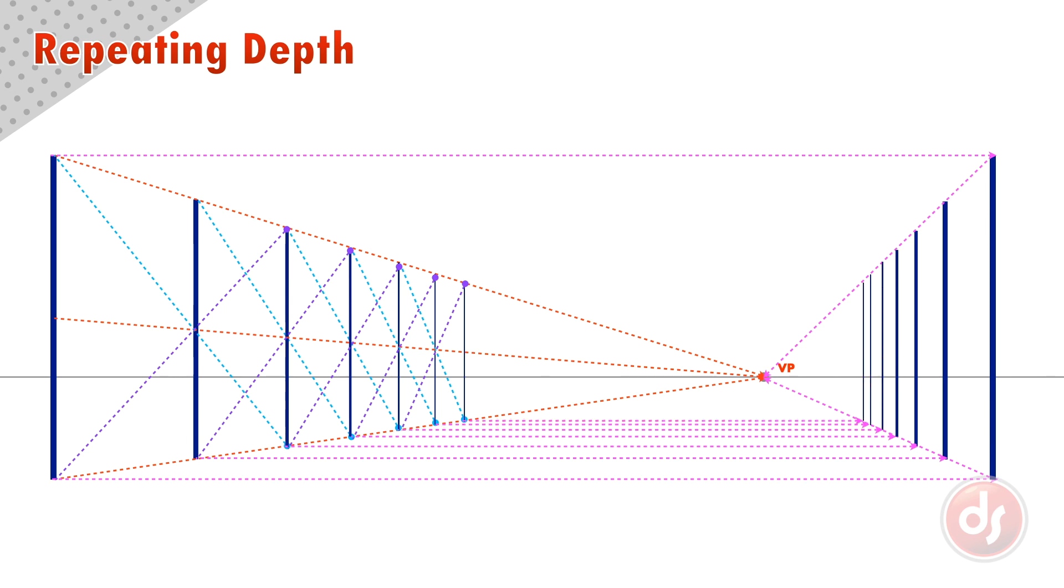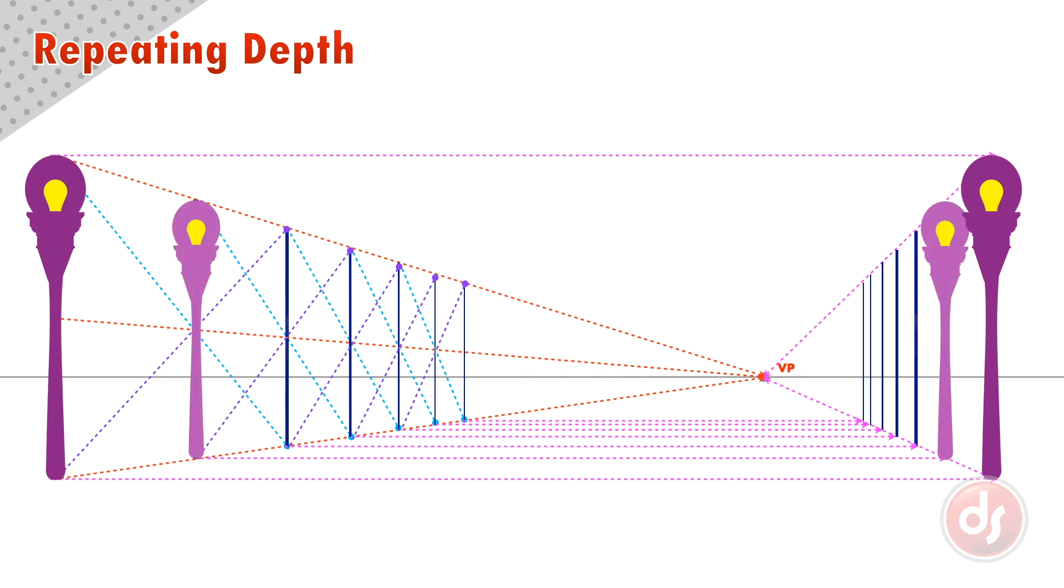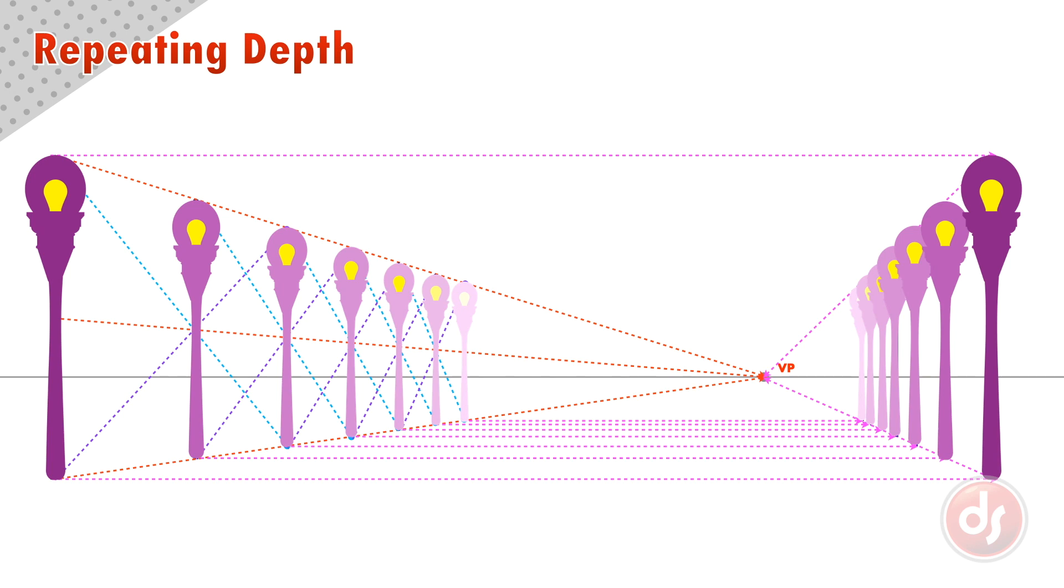But what can you use this for? This works for anything that is evenly spaced in your perspective scene, maybe something like lampposts, or it could be a fence, parking meters, or anything your imagination can come up with.